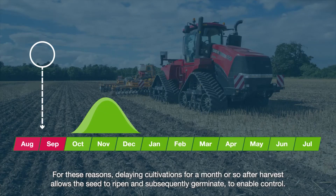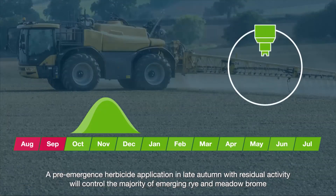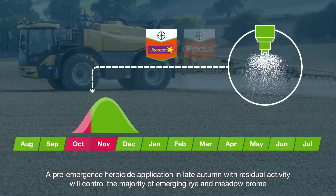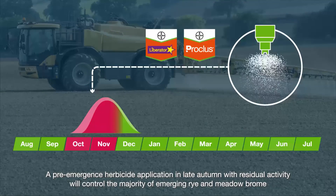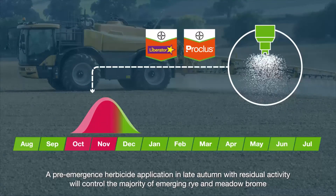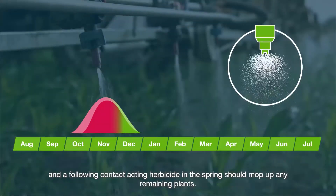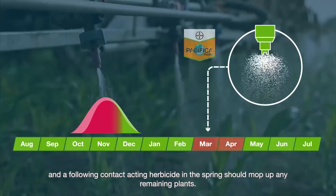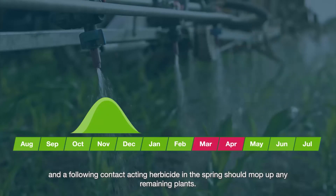A pre-emergence herbicide in late autumn with residual activity will control the majority of emerging rye and meadow brome, and a following contact-acting herbicide in the spring should mop up any remaining plants.